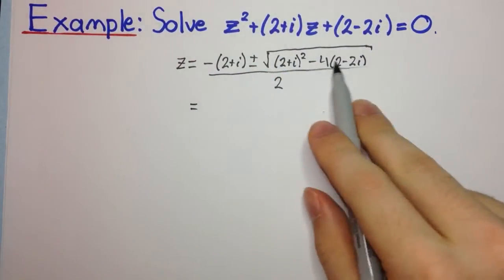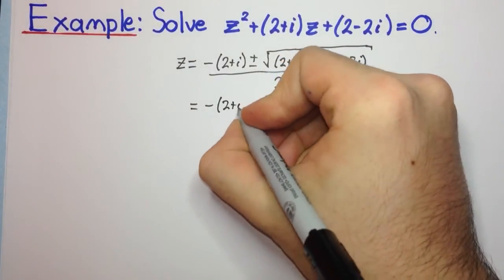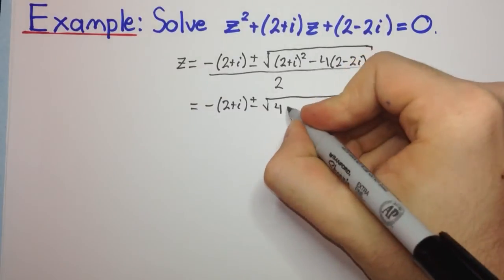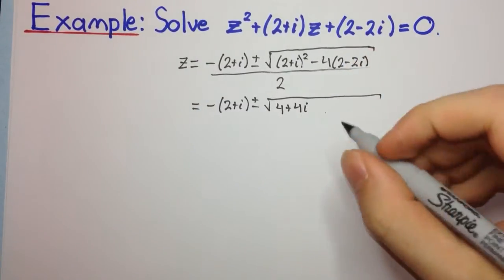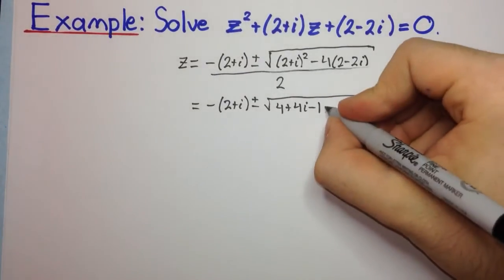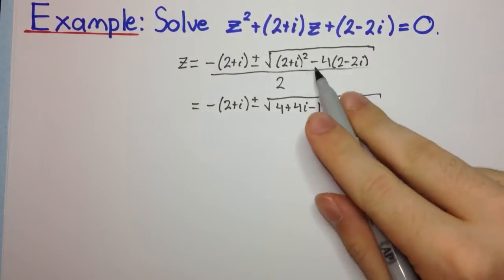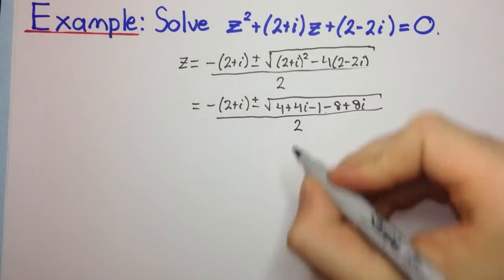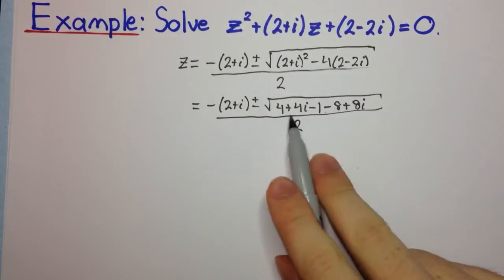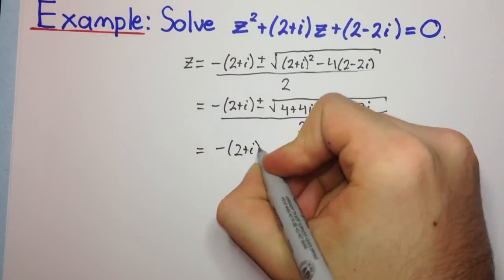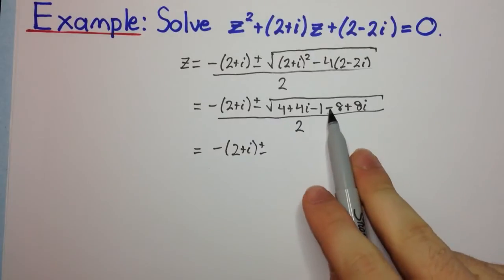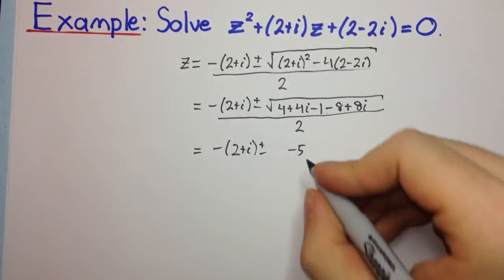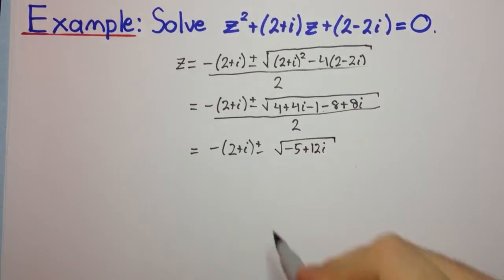Now let's simplify what we have under this radical. The square of (2 + i) is going to be 4 plus 2 times 2 times i, which is 4i, plus i², which is minus 1. Then minus 4 times 2 will be minus 8, and minus 4 times minus 2i will be plus 8i, all over 2.